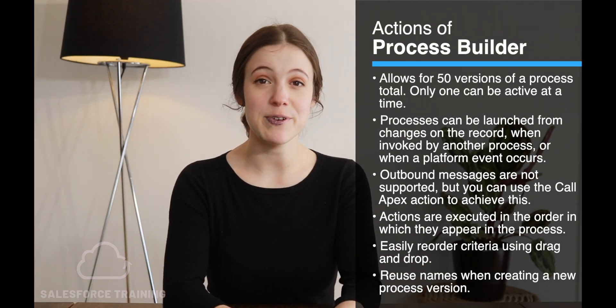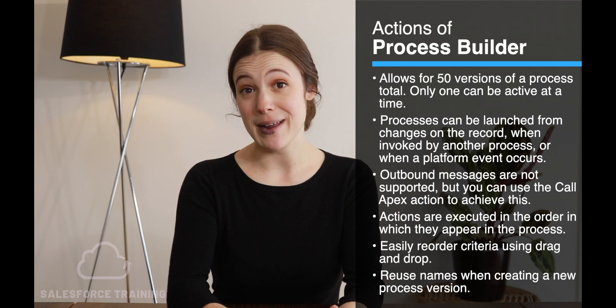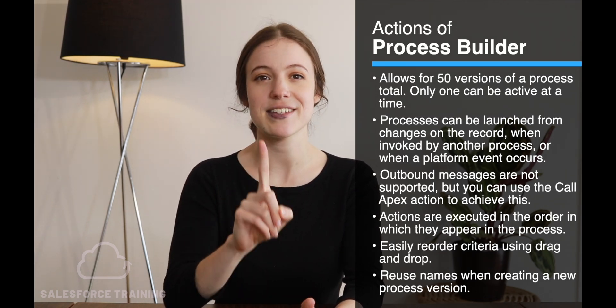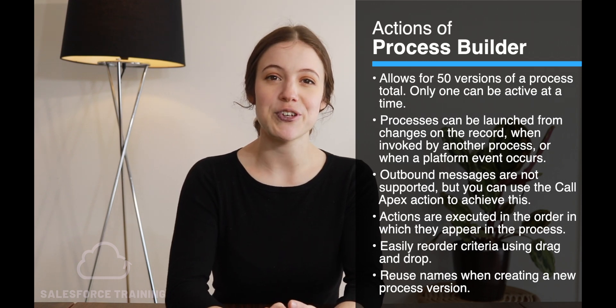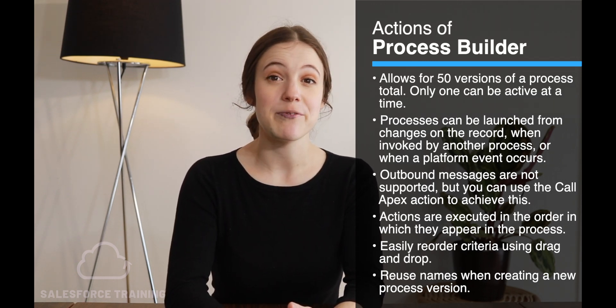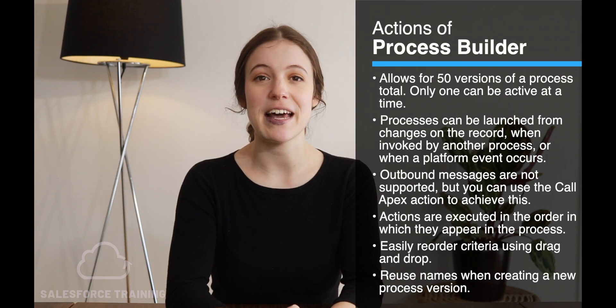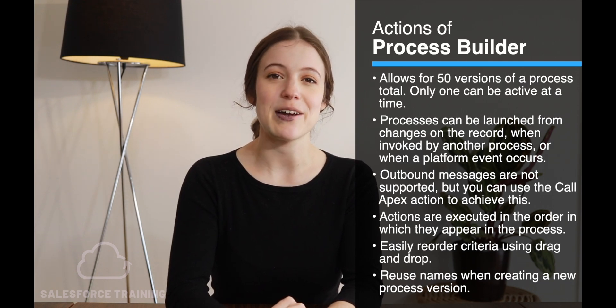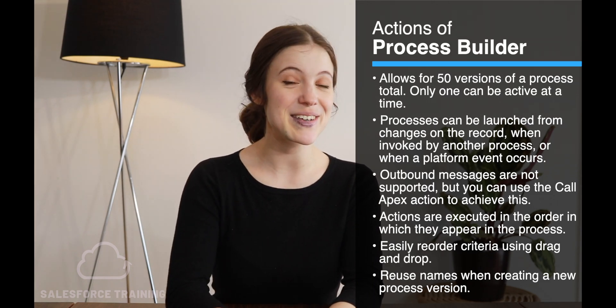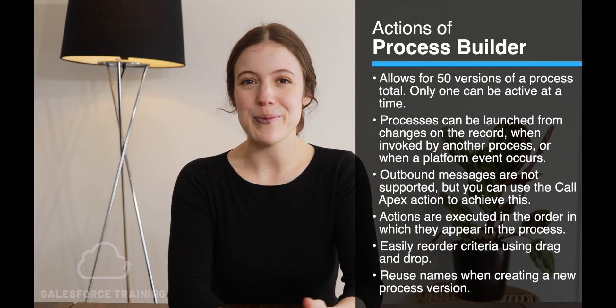There are some considerations when it comes to Process Builder — important both when you're building and when you want to edit or update an existing process. Process Builder only allows for 50 versions of a process in total, and it's important that you only have one active at a time. Processes can also be launched from changes on a record, invoked by another process, or when a platform event occurs. You have to be careful here because you could end up in a loop where updating a record triggers another process, which updates a record, and then triggers another process.